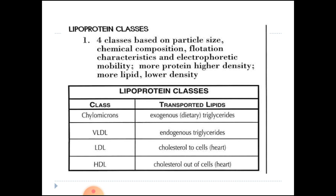Chylomicrons transport exogenous triglycerides — that is, dietary triglycerides. VLDL carries endogenous triglycerides into circulation. LDL carries cholesterol from the liver to other tissues such as the heart. HDL is the good type of cholesterol that carries cholesterol out of cells, from peripheral tissues back to the liver.